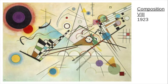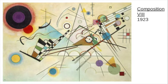This painting is called Composition 8. What kind of music do you think he was listening to — fast or slow? What group of colors do you think Kandinsky used? Primary, secondary, warm, or cool?